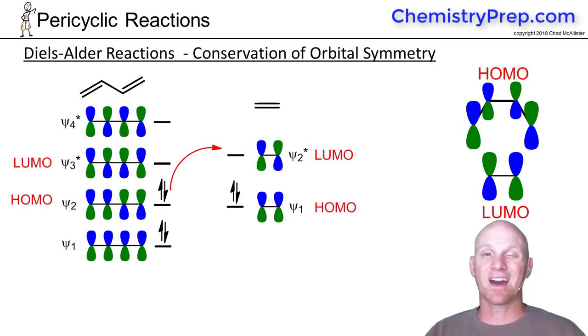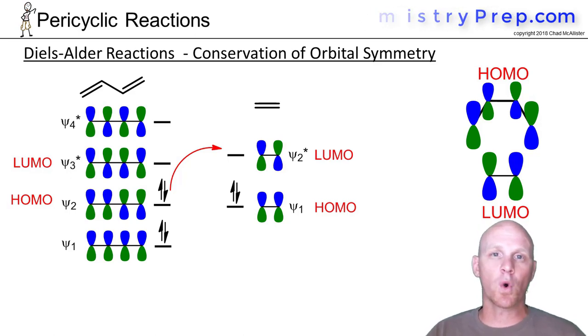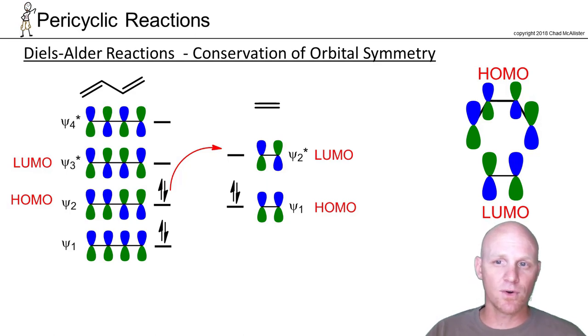The last part of Diels-Alder reactions - I've got to talk about the molecular orbital picture of it, and we call this conservation of orbital symmetry. This explains why certain cycloadditions happen and certain ones don't, and some different stereochemical effects we see. It turns out we've got to have conservation of orbital symmetry.